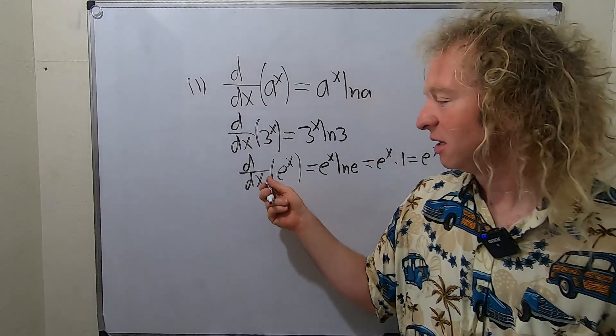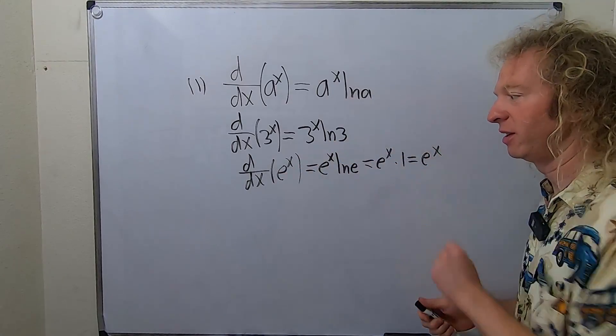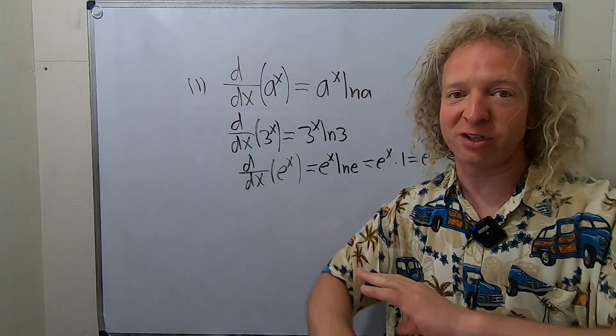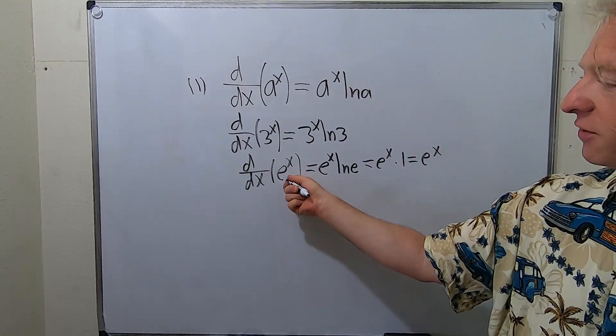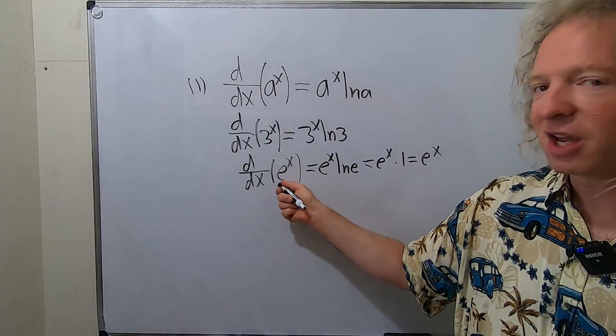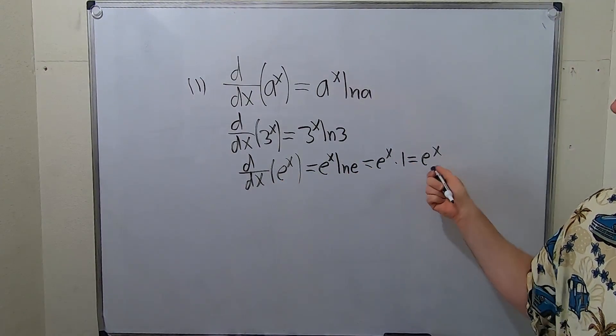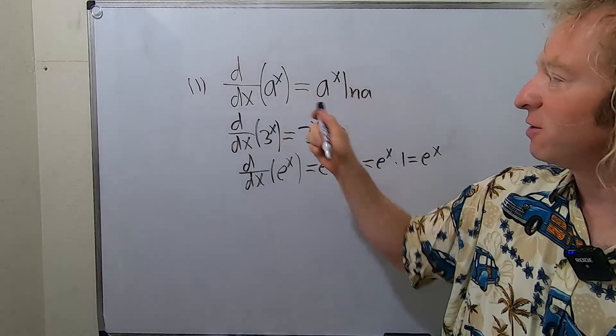So e to the x is that all-important function who is its own derivative. It's the only non-zero function in the entire world where if you take the derivative of e to the x, you get e to the x. So the rate of change is equal to the height of the graph. It's pretty deep. So that's the first formula.